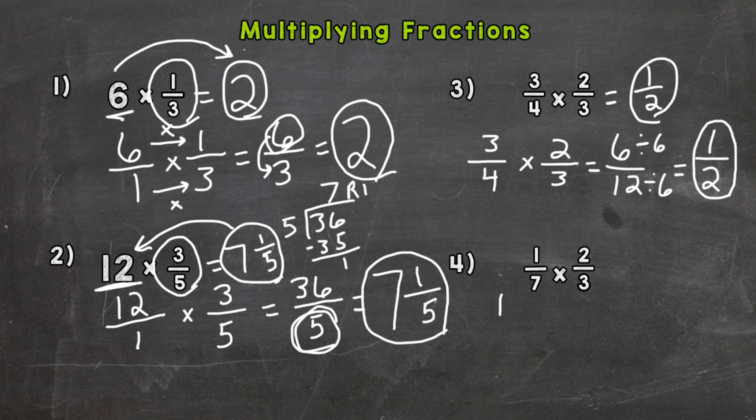All right, number four, we have one-seventh times two-thirds. Straight across, one times two is two, and seven times three, twenty-one. So we get two over twenty-one. Now the only common factor between two and twenty-one is one, so we are simplified here. That's as far as that fraction can break down, so we are done. Two over twenty-one.